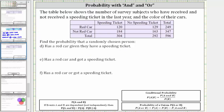Because we're given they have a speeding ticket, we're only concerned about the people in this column here. Notice a total of 304 people have a speeding ticket. So we're asked to find the probability a randomly chosen person has a red car given they have a speeding ticket. Of those that have a speeding ticket, notice 120 of them have a red car. Therefore, the probability a randomly chosen person has a red car given they have a speeding ticket is 120 divided by 304. This is called conditional probability.